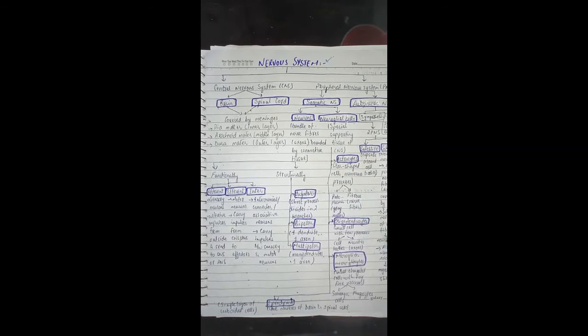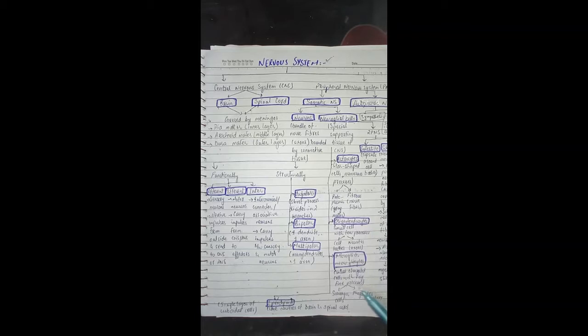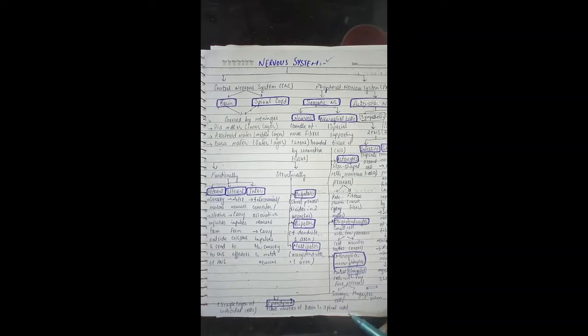Next we have oligodendrocytes. These are small cells with few processes — they are associated with cell bodies or axons. Then, microglia or microgliocytes. These are small cells but elongated in shape, with a long tube-like structure and many fine processes. These are scavenger cells or phagocytes.